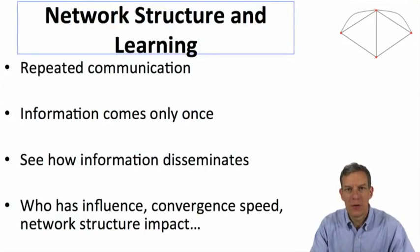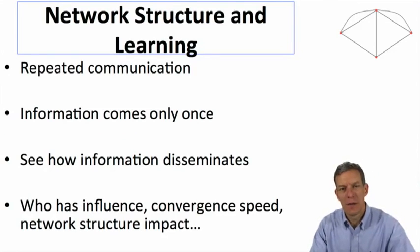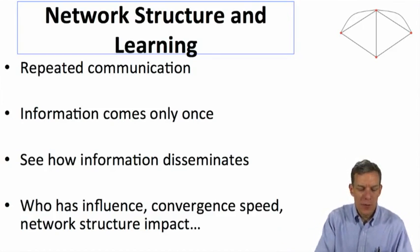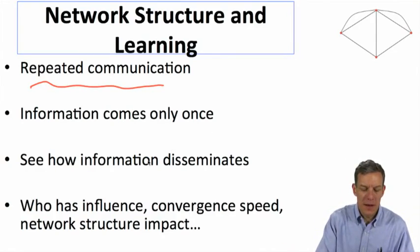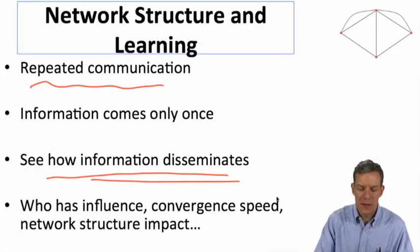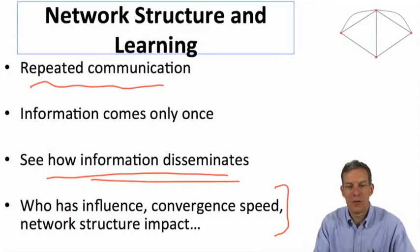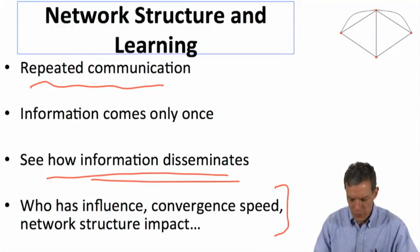So the structure now is going to be a little different than what we saw before. Here, the information is going to come in only once at the beginning. So people are going to start with some initial beliefs, and then you're talking to your neighbors, you're talking to your friends. So there'll be repeated communication, and we'll see how the information disseminates, who has influence, what's the convergence speed, how does network structure impact all of this. So there's a lot of things that we can analyze here fairly accurately.